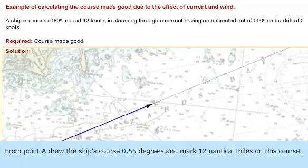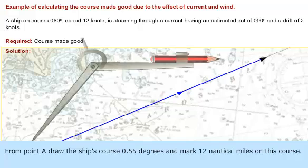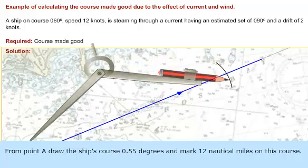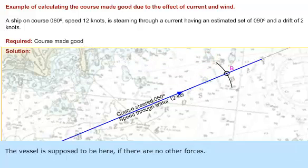From point A, draw the ship's course 055 degrees and mark 12 nautical miles on this course. The vessel is supposed to be here if there were no other forces.